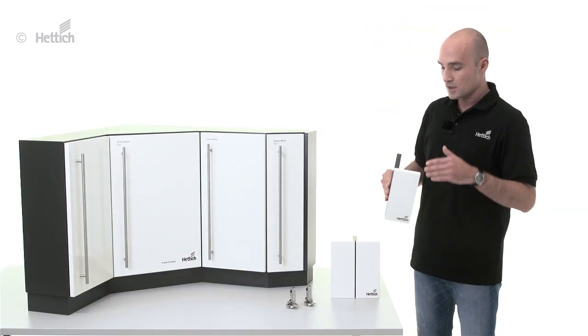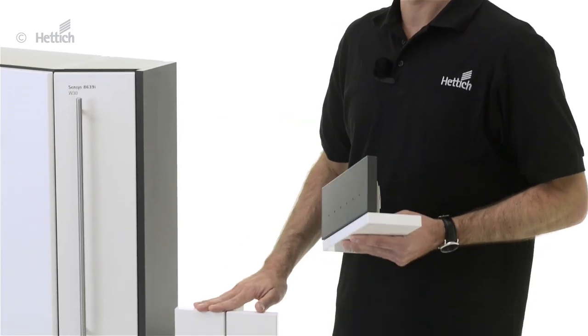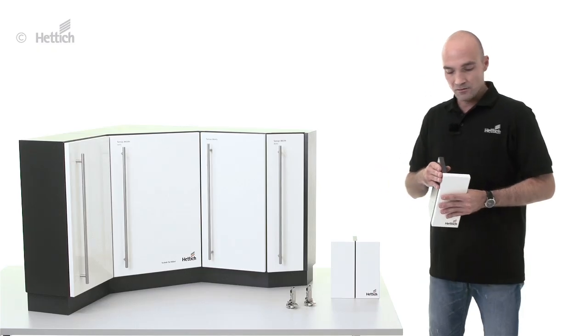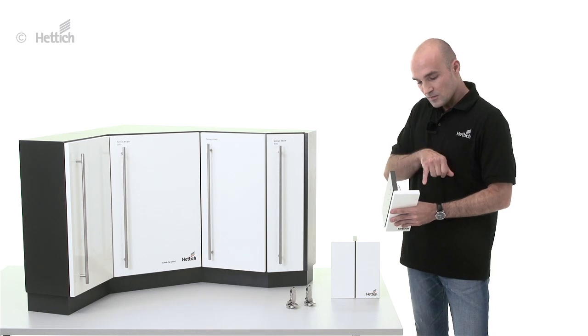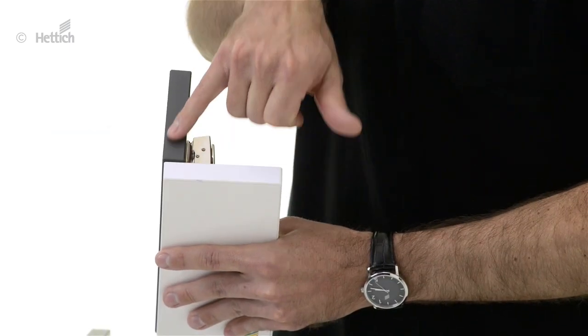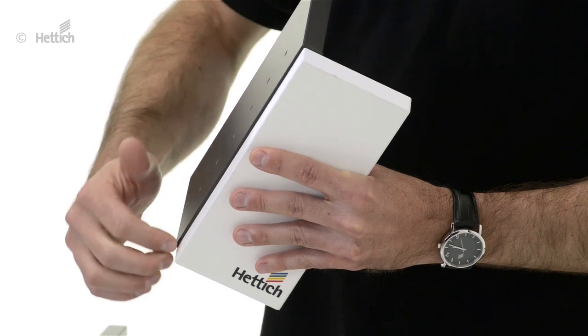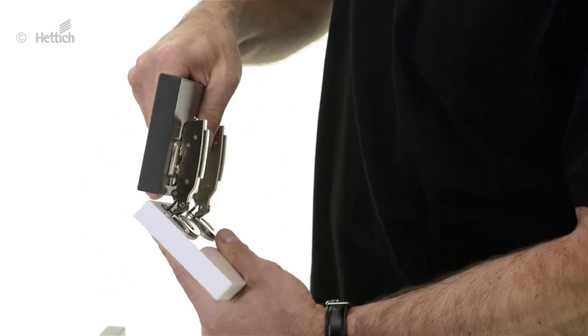There are two different types of standard applications: the full overlay application and the half overlay application. On the full overlay application you can see that the door is almost overlying the side panel and there is only a minimum reveal that is needed to open the door.